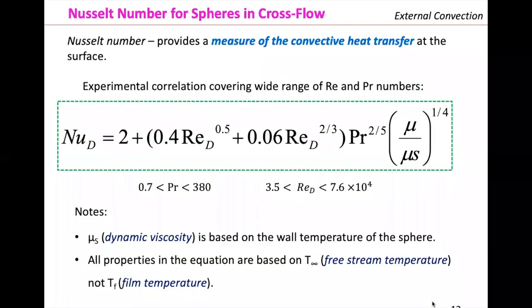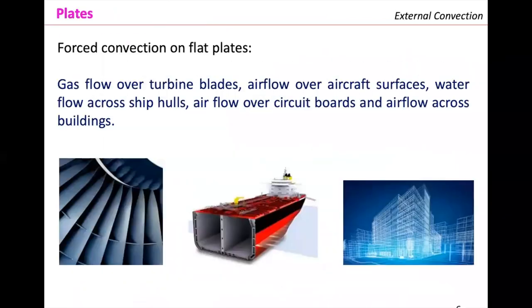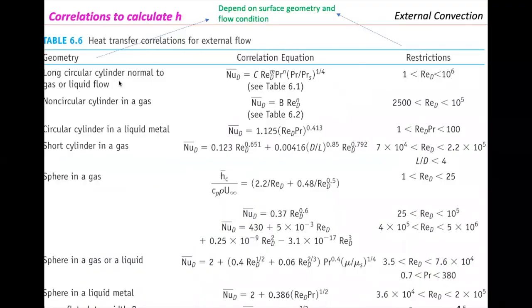We were talking about external convection. We said that we are going to focus first on external, then on internal, then on natural convection. Now we are essentially learning how to use table 6.6 for external convection. This is a table you must have for exam two, for sure.